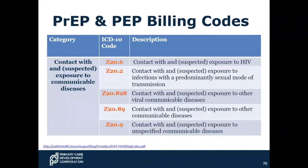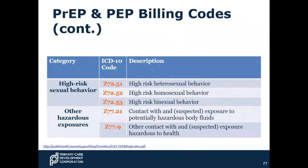Some PrEP and PEP billing codes — there is some overlap with the previously listed HIV codes. A lot of the difference in these codes is whether or not there was exposure to HIV, suspected exposure to other infections, suspected possible transmission, or exposure to viral communicable diseases. Much of this comes down to how the patient describes the exposure. ICD-10 gives us every option to be as specific as possible when we code. Other diagnosis codes you can use alongside counseling and screening include high-risk sexual behavior and other hazardous exposures. These are optional related codes you may want to use when billing.